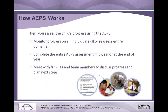Once you've had your intervention and goal planning meeting, you'll assess the child's progress using the AAPS again — monitoring progress on individual skills or reassessing entire domains. Depending on how your program is set up, you can complete the entire AAPS mid-year, at the end of the year, or quarterly. With family involvement, you'll continue to meet with families and team members to discuss the child's progress and next steps, always updating intervention priorities.